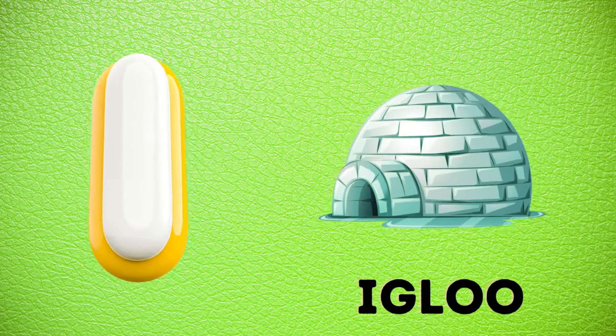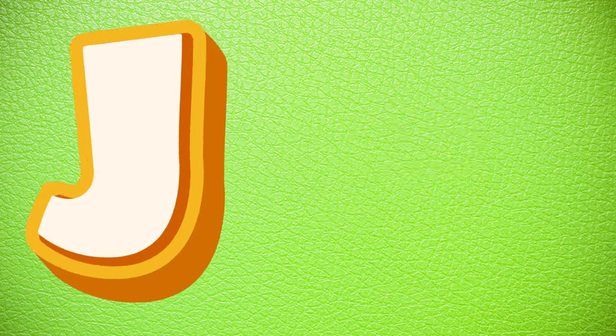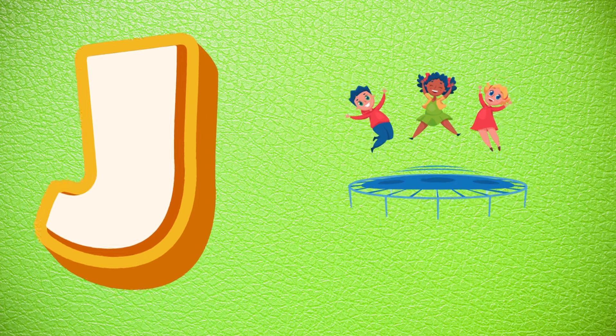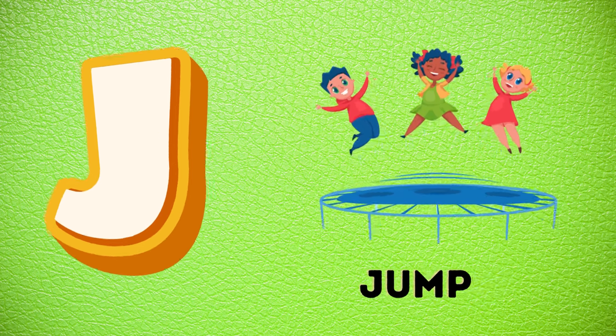I is for igloo, i-i-igloo. J is for jump, j-j-jump.